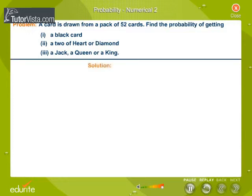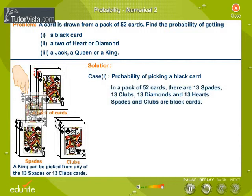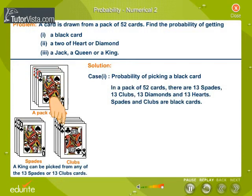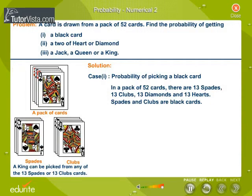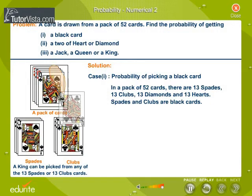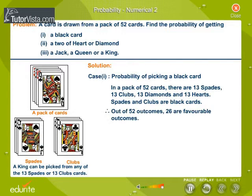Solution Case 1: Probability of picking a black card. In a pack of 52 cards, there are 13 spades, 13 clubs, 13 diamonds and 13 hearts. Spades and clubs are black cards. Therefore, out of 52 outcomes, 26 are favorable outcomes.